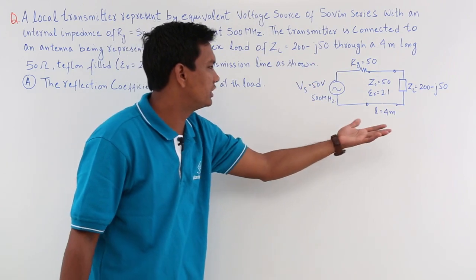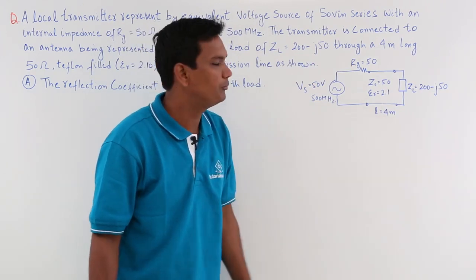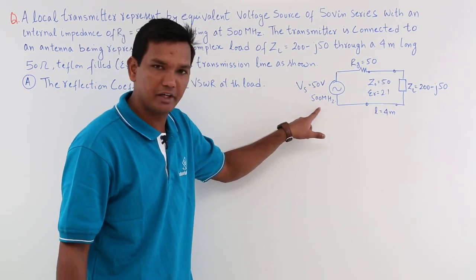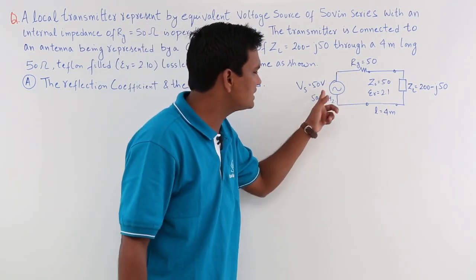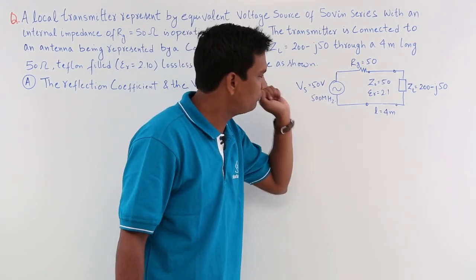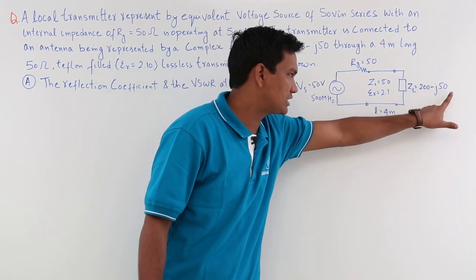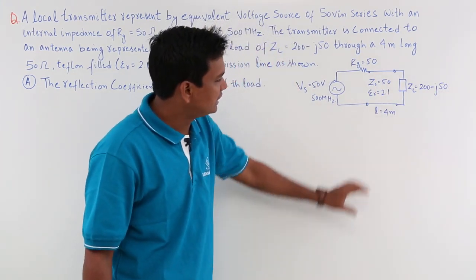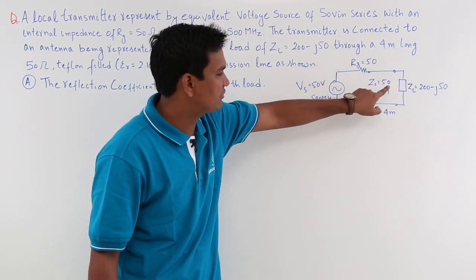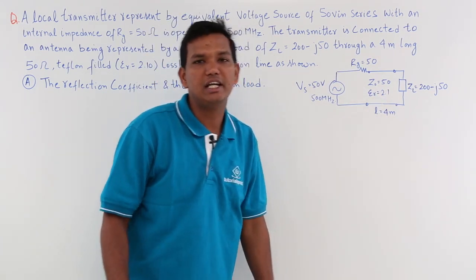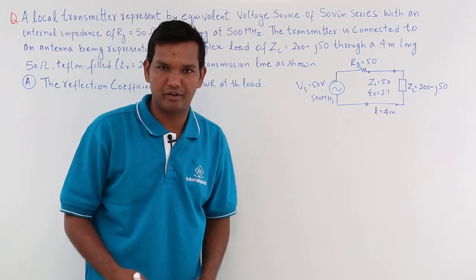The whole question, the crux of the question, is in this figure. There is a generator given with 50 volts and 500 megahertz. It has its internal resistance of 50 ohm, connected to a complex load which is 200 minus 50j. The characteristic impedance is 50, and the length of the wire is 4 meters with relative permittivity of 2.1.